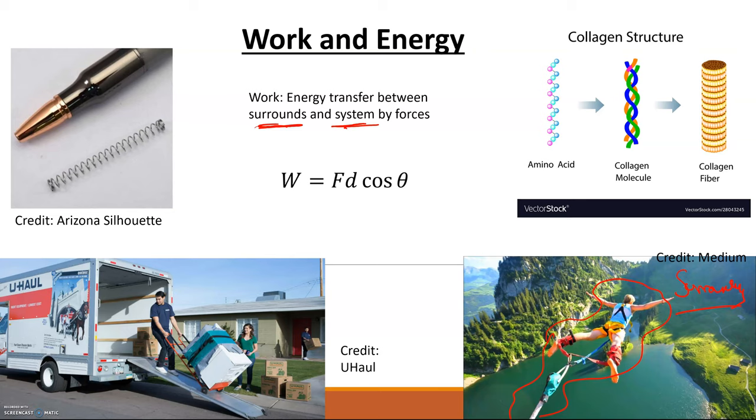So mathematically what is work? Well work is the force, the magnitude of the force, times the magnitude of displacement times the cosine of the angle between them. So if your force is in this direction and your displacement is in this direction, the angle between them is zero.